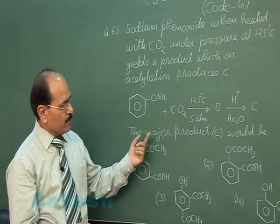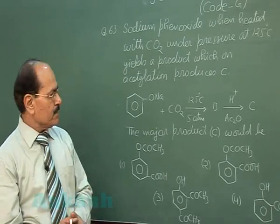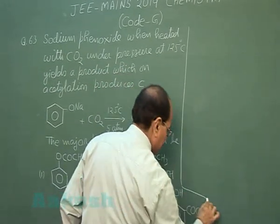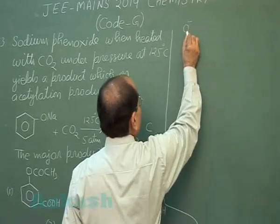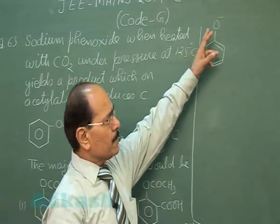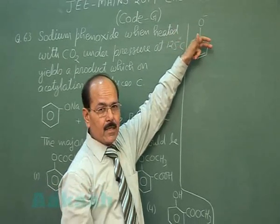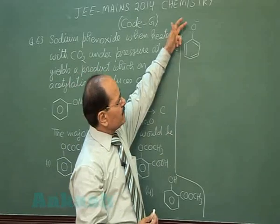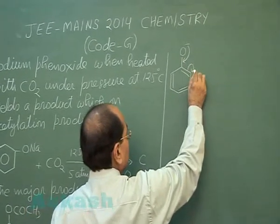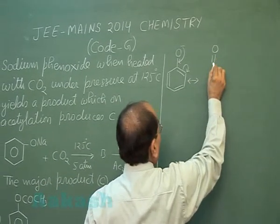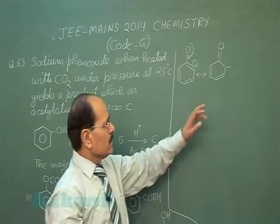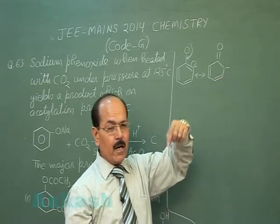Four options are given for the major product C. When sodium phenoxide reacts with carbon dioxide, the phenoxide ion has increased electron density at the ortho and para positions because the negative charge on oxygen is in resonance with the benzene ring. The negative charge at the ortho position attacks the carbon atom of carbon dioxide.